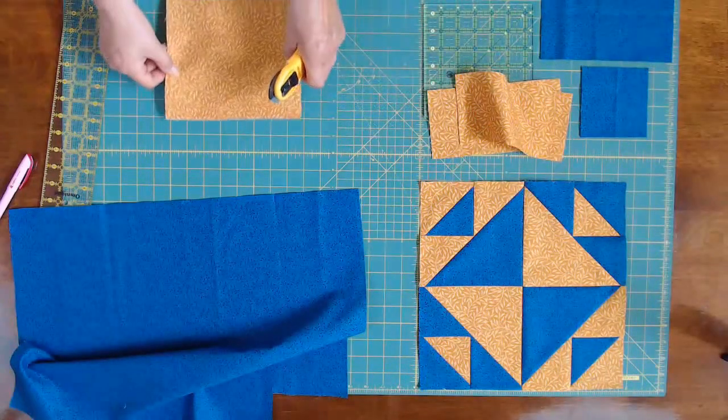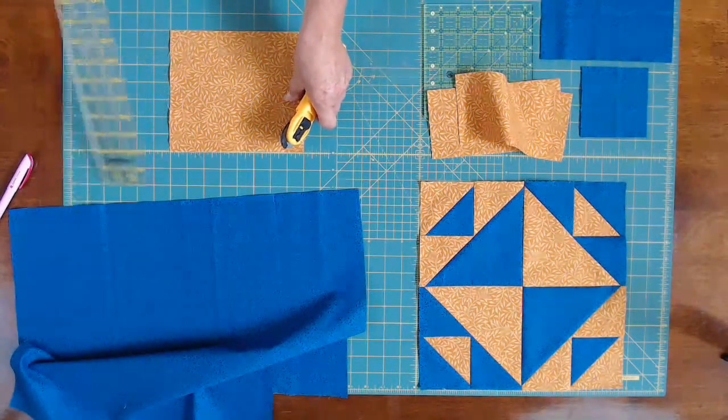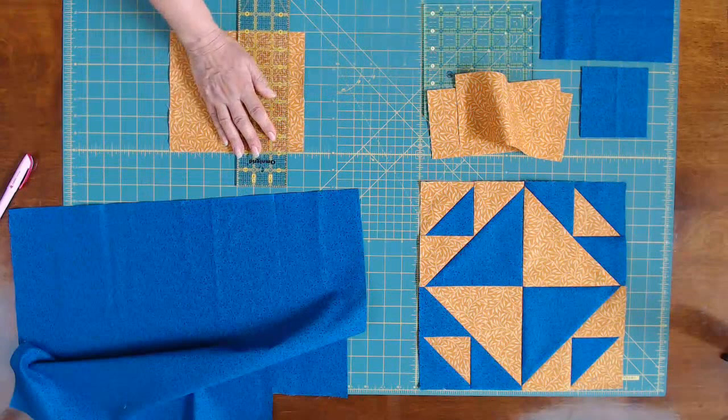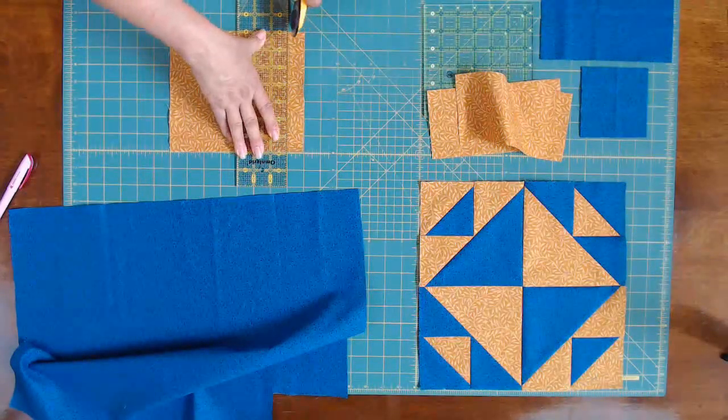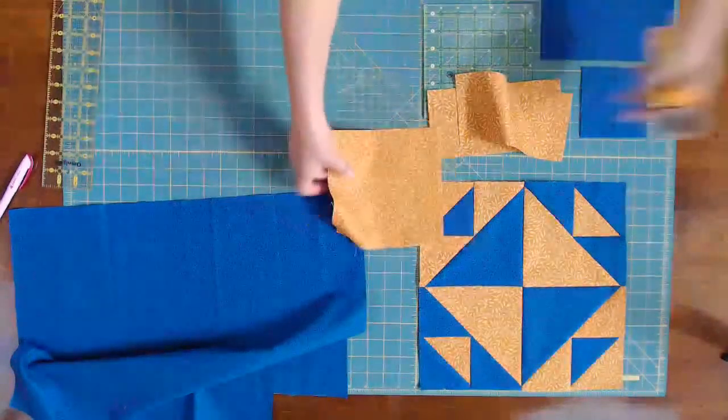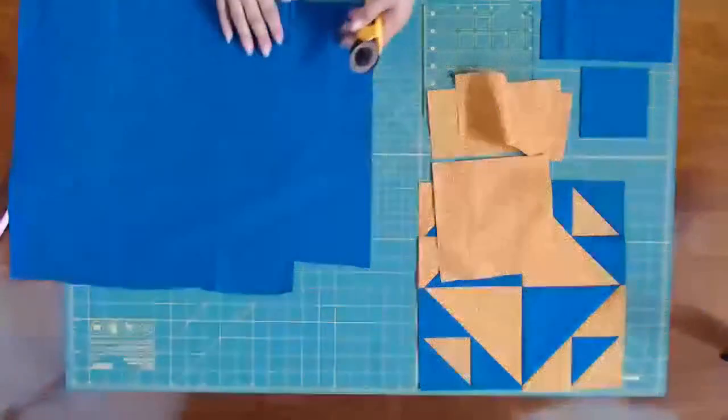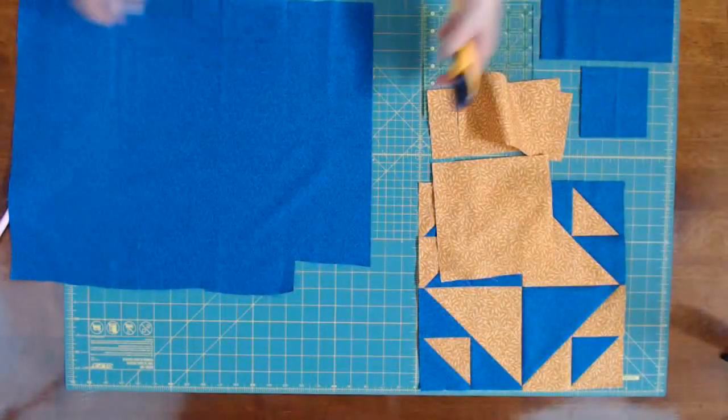Let me square up my seven inch square. And there's my seven inch square. Now I need to cut a seven inch square out of the blue fabric. I already have my two four by eights there.